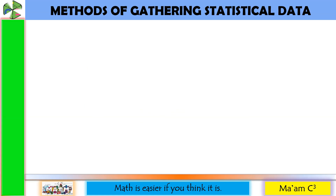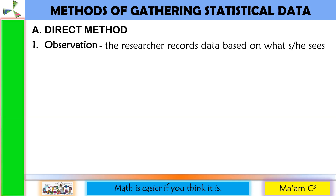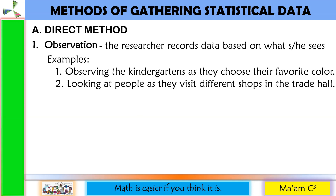There are two methods of gathering or collecting data. The first one is direct method. You can do this in two ways. One is through observation, where the researcher records the data based on what he or she sees. Examples: observing the kindergarteners as they choose their favorite color, and looking at people as they visit different shops in the trade hall.